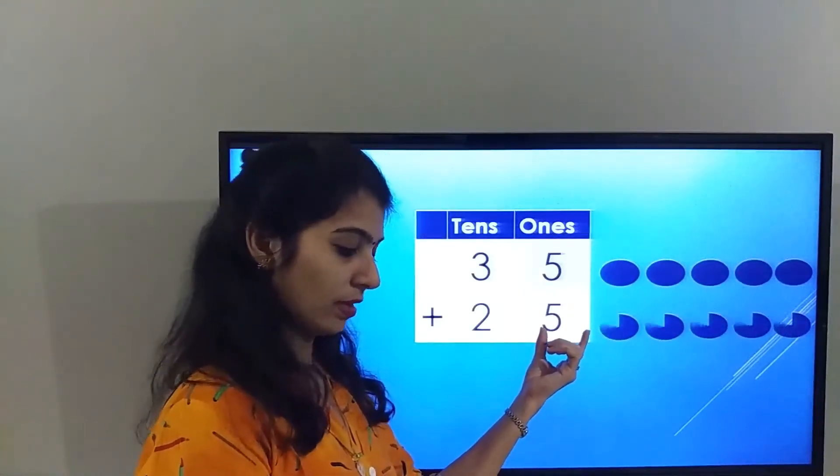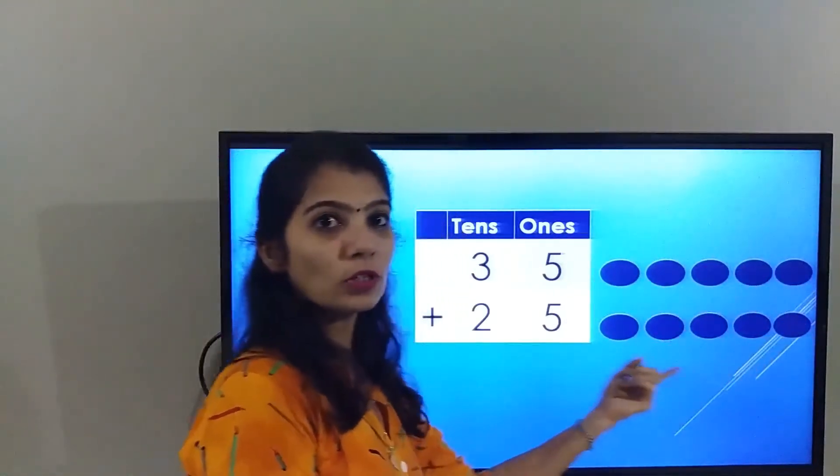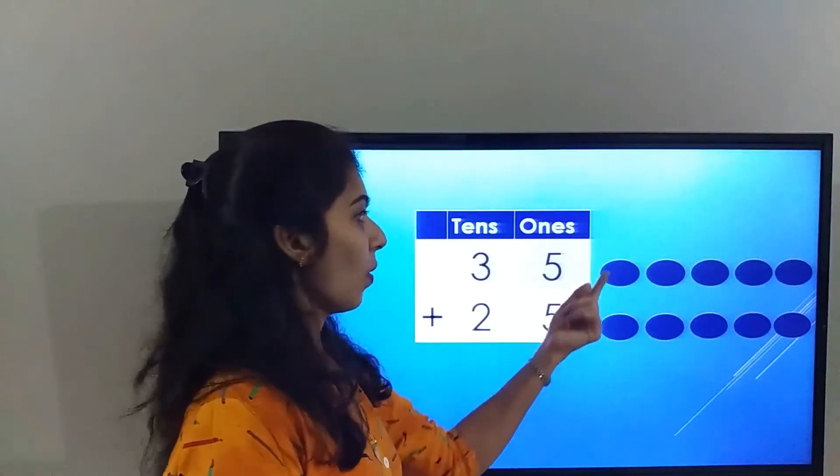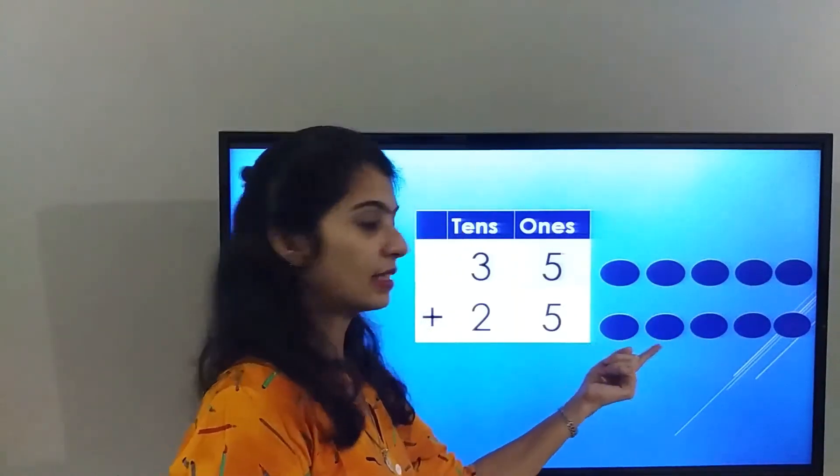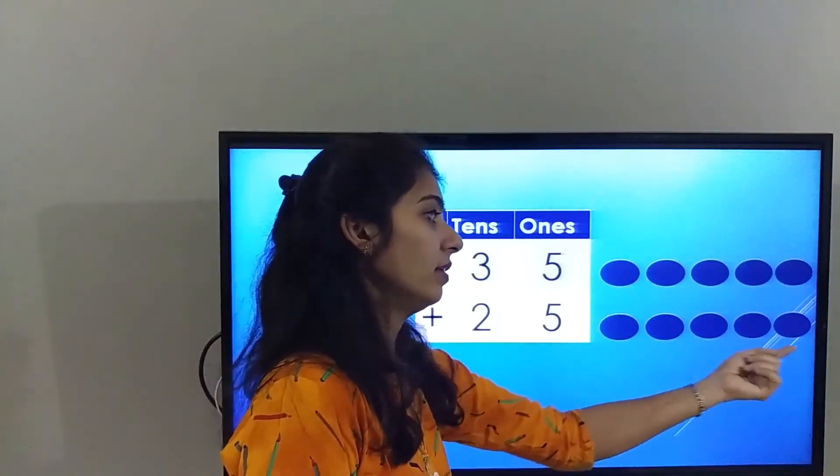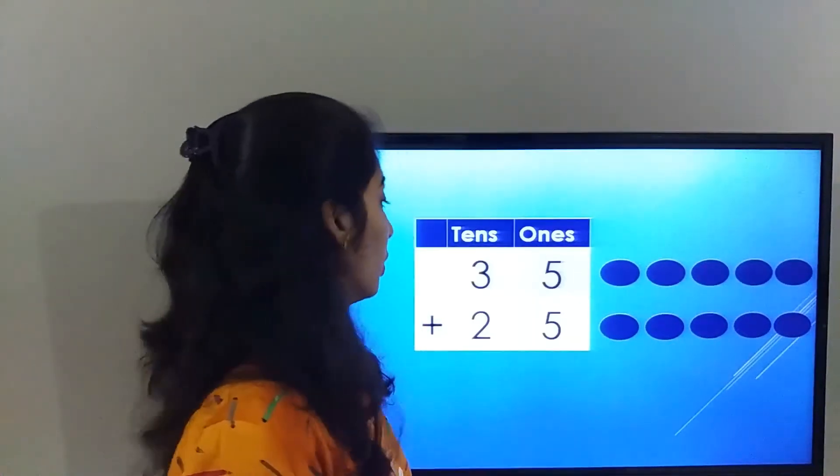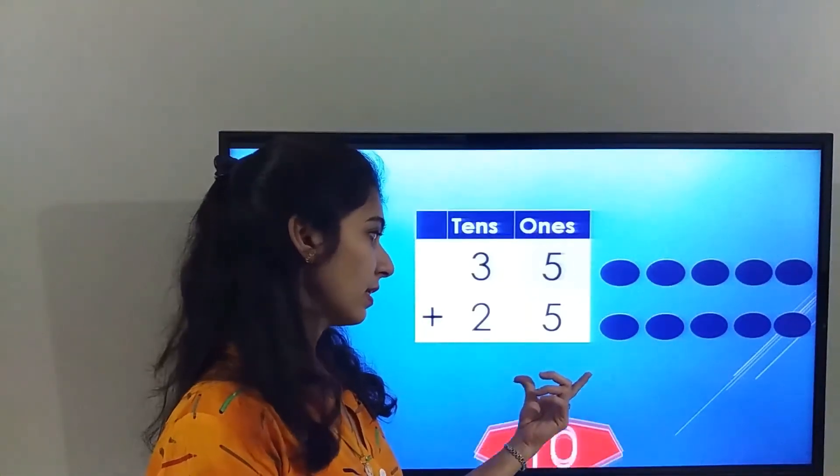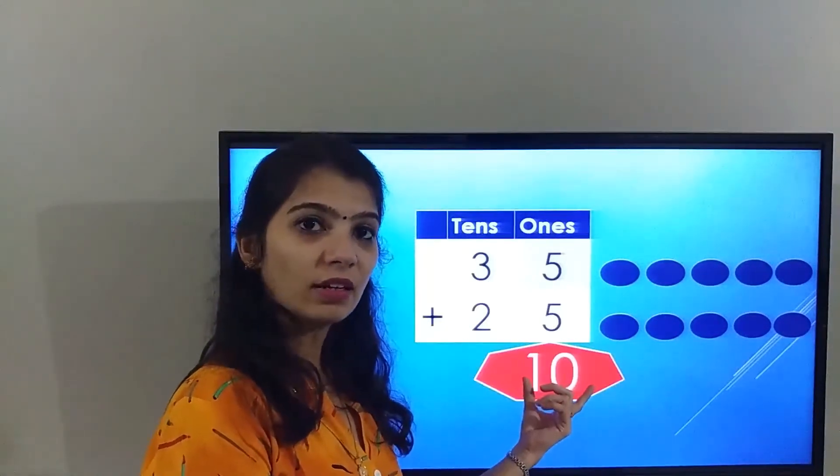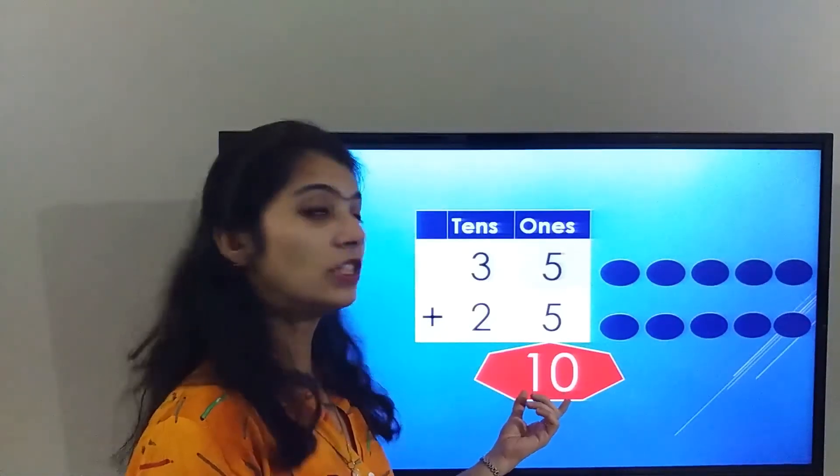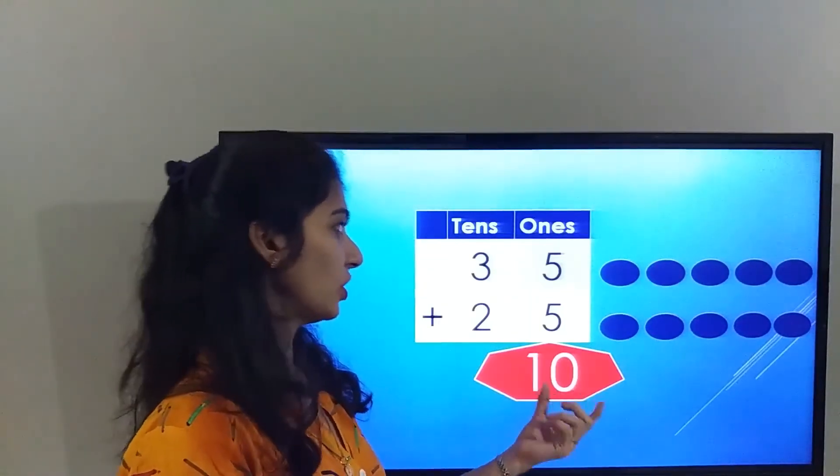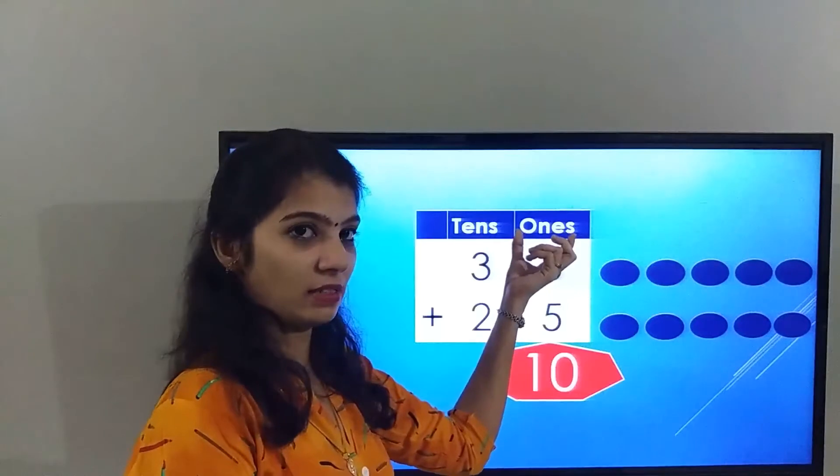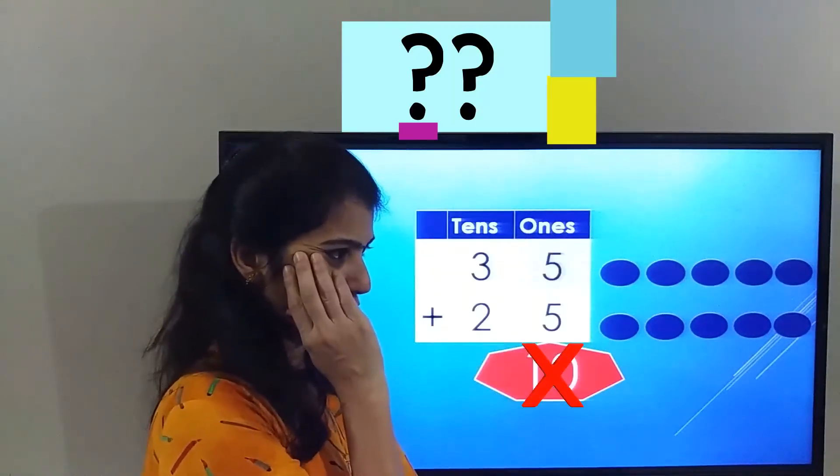Let's count all the balls together: one, two, three, four, five, six, seven, eight, nine, ten. So the answer in the ones place is ten. But ten is a two-digit number. We cannot write a two-digit number in the ones place. So what are we going to do now?